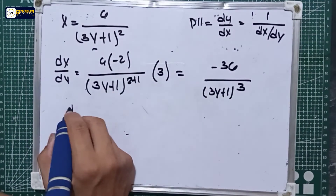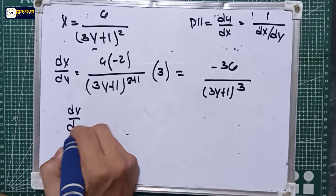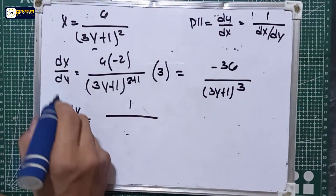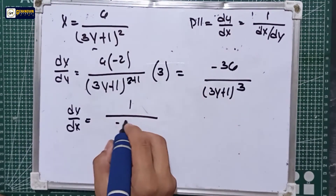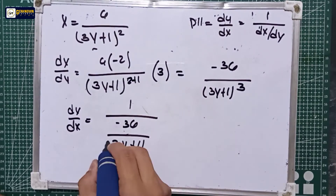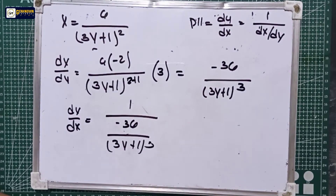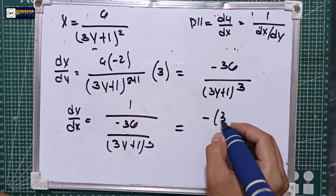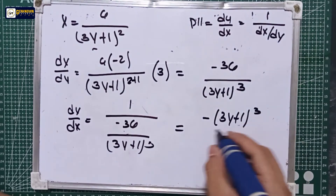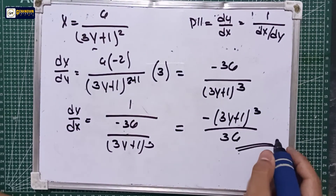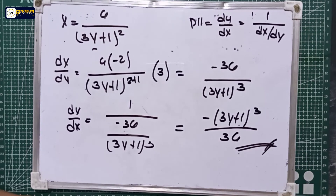Using the inverse function rule D11, dy over dx is equal to 1 over dx over dy. Since dx over dy is equal to negative 36 over (3y + 1) cubed, the final answer is negative (3y + 1) cubed all over 36.